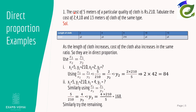Let's take an example for direct proportion. The cost of 5 meters of cloth is 210 rupees; tabulate the cost for 2, 4, 10, and 13 meters. Whenever you get a proportion question, first identify whether it is direct or inverse proportion — it will not be stated in the question. Here, if the cloth quantity increases, the cost increases, so it is clearly direct proportion.